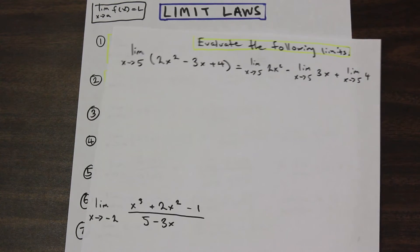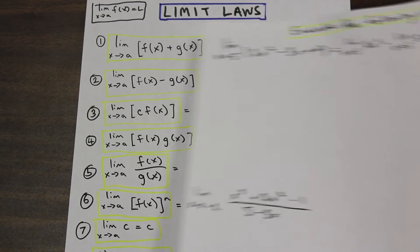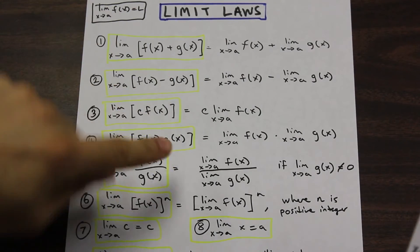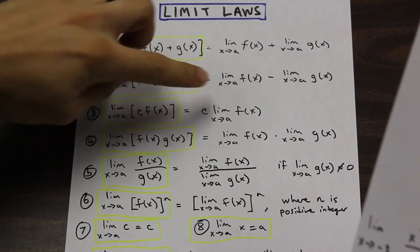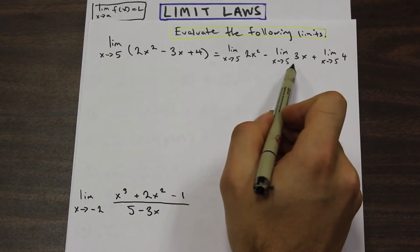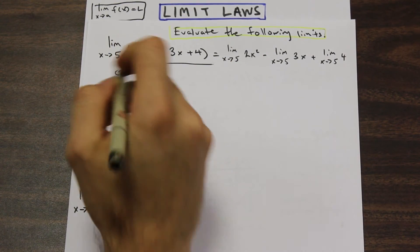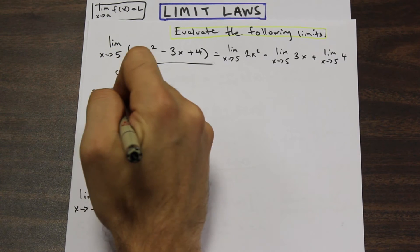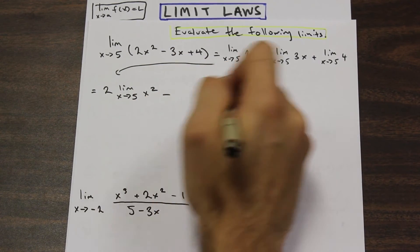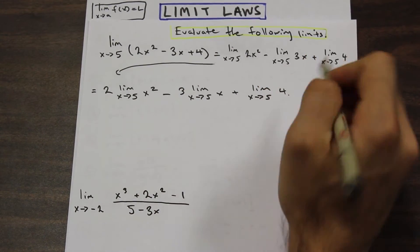Now we need to look back at the limit laws and see if any more apply. Looking at law three, if we have a constant times a function, we can move the constant outside and evaluate the limit of the function alone. We have two functions here with constants in front of them, so we take those constants and move them outside. This equals two times the limit as x approaches five of x squared, minus three times the limit as x approaches five of x, plus the limit as x approaches five of four — four is just a constant, so we leave that.